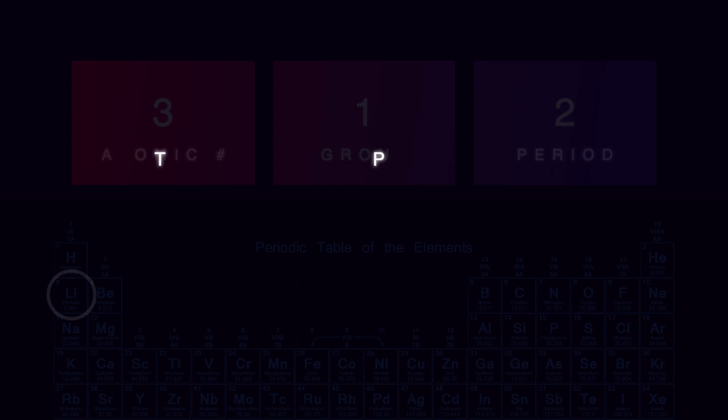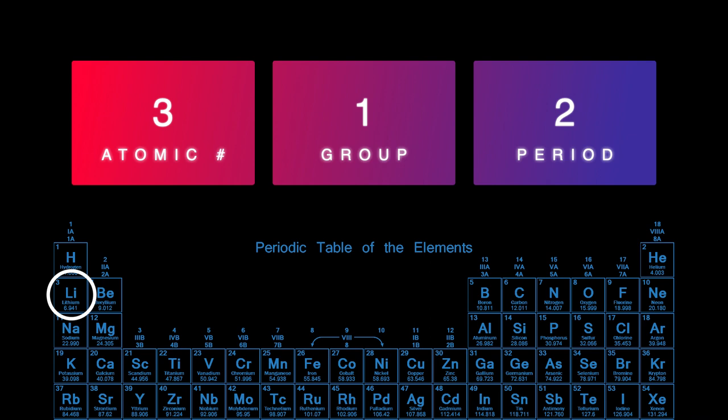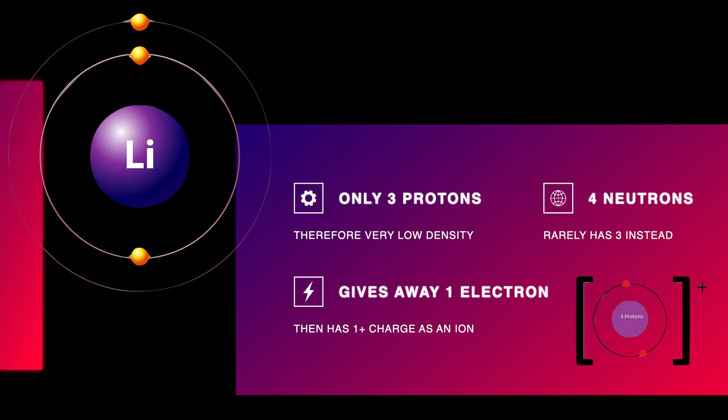Lithium's atomic number is 3, which means it is the third element in the periodic table. It is in group 1, which is the alkali metals, and is in period 2. Lithium only has 3 protons, so it has a very low density. It usually has 4 neutrons, but it rarely has 3. To become an ion, lithium gives away an electron, which gives it a plus 1 atomic charge.